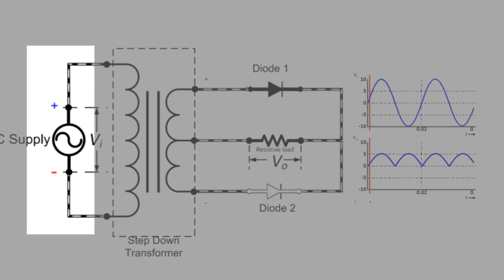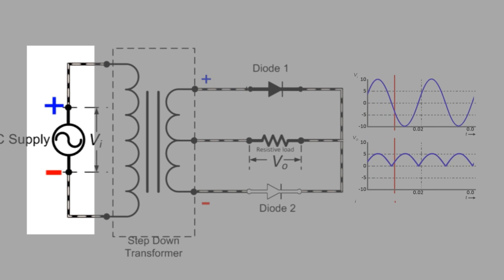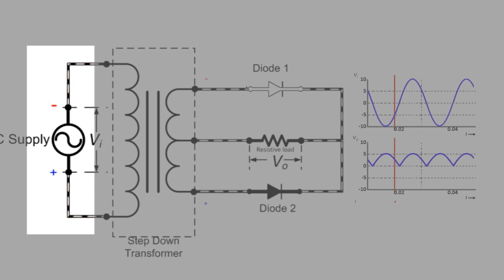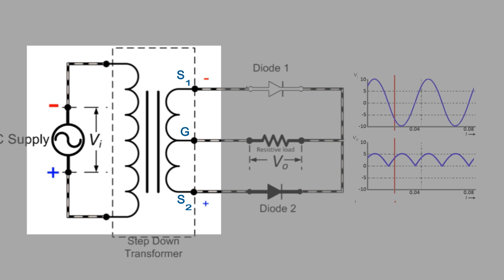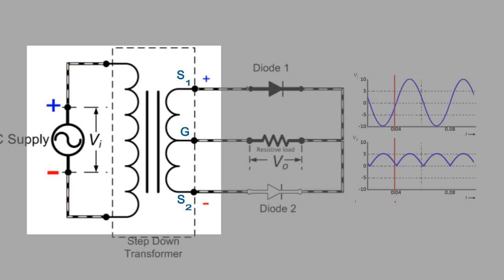When we apply an AC input to the primary side of the transformer, this input makes the secondary ends S1 and S2 become positive and negative alternatively.